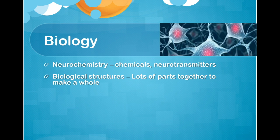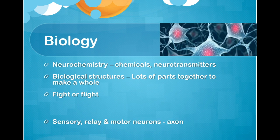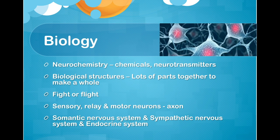As well as neurochemistry, you need to know the term biological structures — referring to groups of neurons that make up the brain or particular brain areas. These elements come together as biological structures. As a heads up, you may also get exam questions on fight or flight, sensory, relay and motor neurons, axons, the somatic nervous system, sympathetic nervous system, and endocrine system — particularly at AS level. I won't cover those here as I'll treat biopsychology as a separate topic, but be aware you may need to look at those.